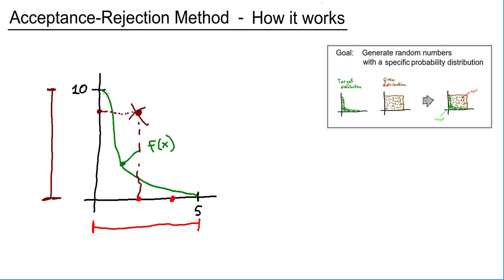And then again, we create a random number between 0 and 10. This time maybe here. A little bit lower. And again, we check and we figure out... Oh no!